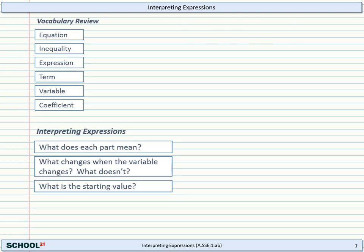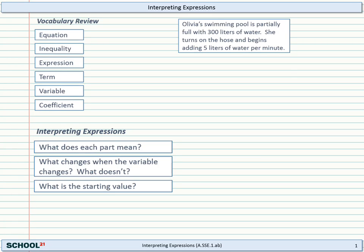Let's look at a real world example. Okay, here we see Olivia's swimming pool is partially filled with 300 liters of water. She turns on the hose and begins adding 5 liters of water more per minute. So what would be an expression for how much water is in the pool? Well, it starts off with the 300 liters. And then it adds 5 liters every minute. What variable should we use for minutes? We could use M or I like to use T anytime there's time. And there's our expression.